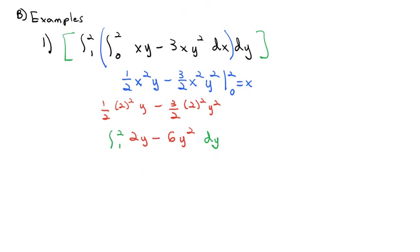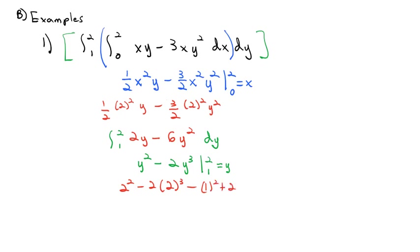This becomes two integration problems in one. Integrating 2y gives y², and the 2 divides out. Integrating 6y² gives 2y³ (since 6÷3=2). We integrate from 1 to 2, plugging in for y. Plugging 2 in: 2² minus 2 times 2³. Subtracting with 1 plugged in: minus (1² minus 2 times 1³), giving 4 minus 16 minus 1 plus 2, which equals negative 11. So the total volume underneath the curve xy minus 3xy² is negative 11, meaning it's below the x and y axis.